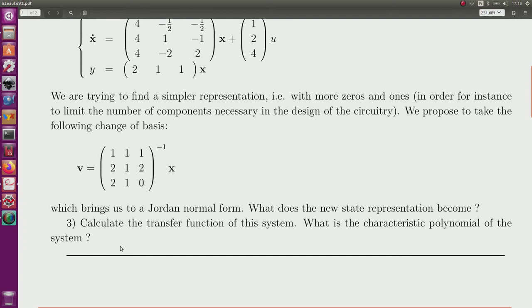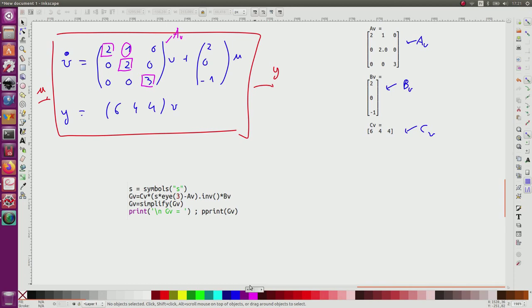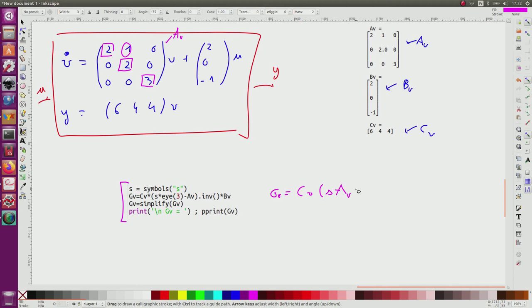Now I have to compute the transfer function of this system and also to compute its characteristic polynomial. To have the transfer function, I will use this Python program. I create a symbol S corresponding to the indeterminate of the Laplace variable. And I will compute the transfer function with respect to V as Cv times (S identity minus Av) inverse times B plus D. But there is no D.